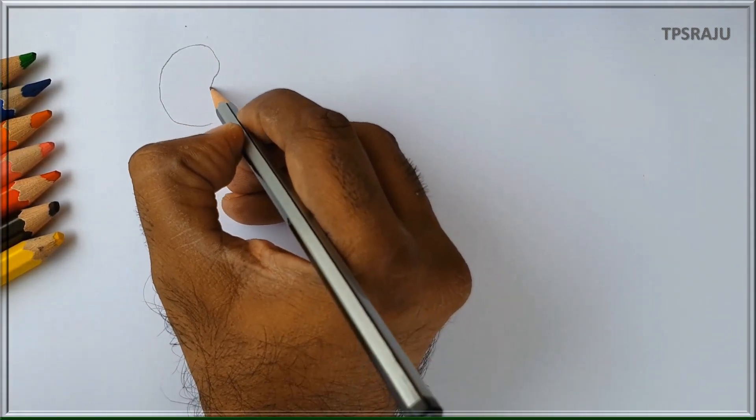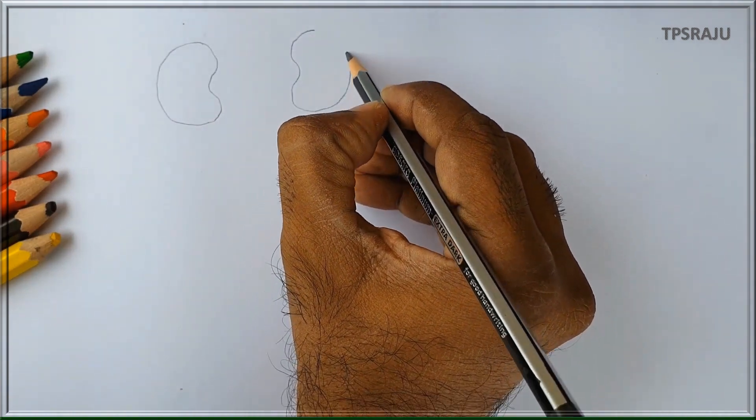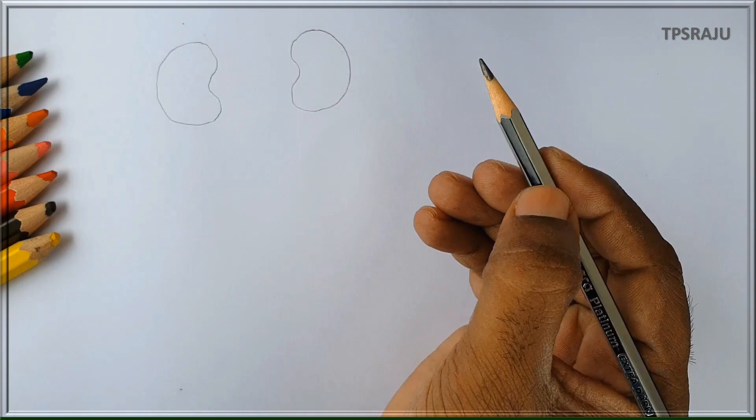A pair of bean shaped kidneys are present in human excretory system. The right kidney is placed slightly lower than the left kidney.